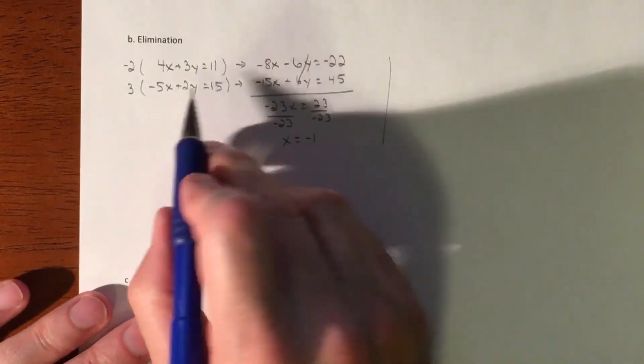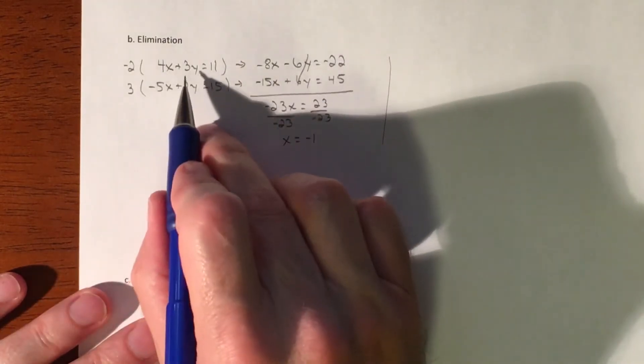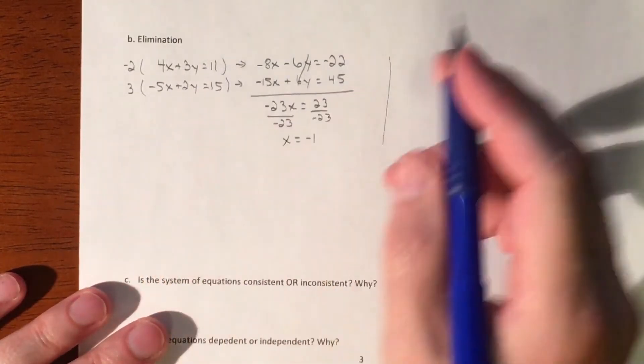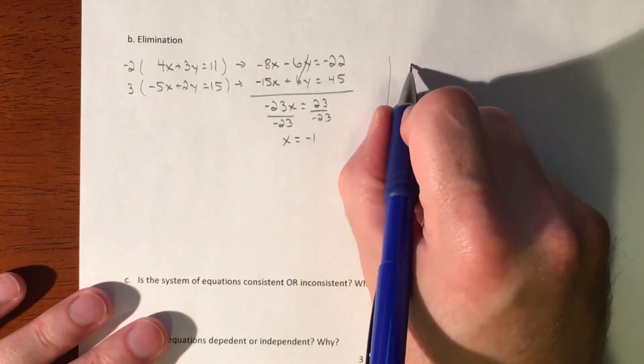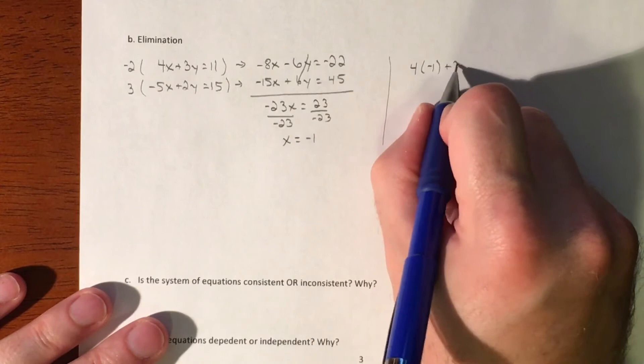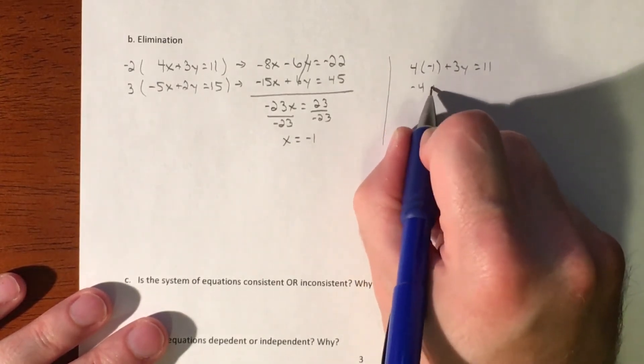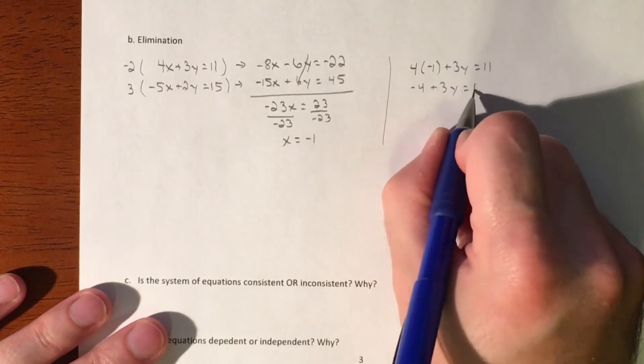So then I'll pick one of the original equations because these are, I just made them bigger, so why use those? Maybe the top one because everything's positive there. So I'm gonna sub in my negative 1. So 4 times negative 1 plus 3y equals 11. So that's negative 4 plus 3y equals 11.